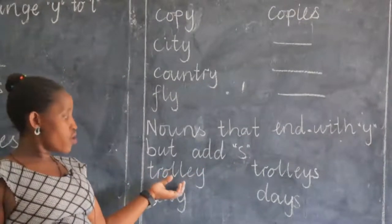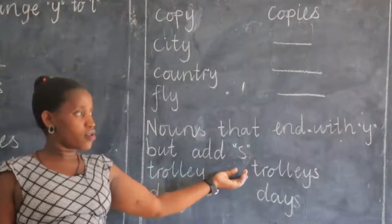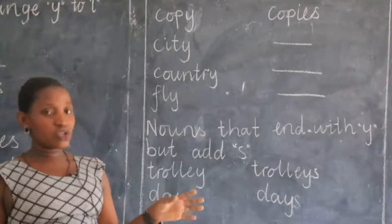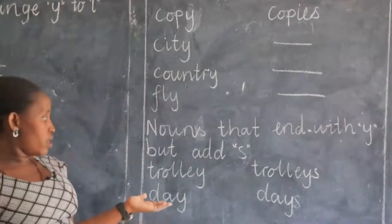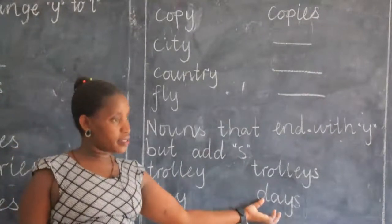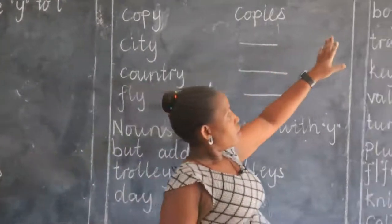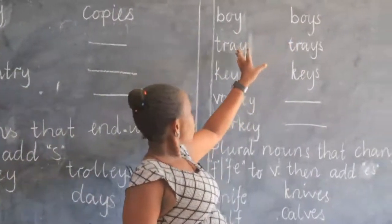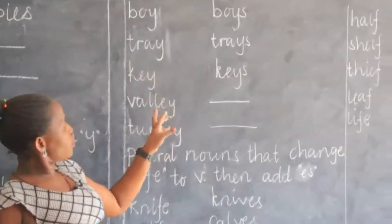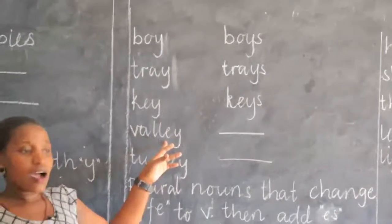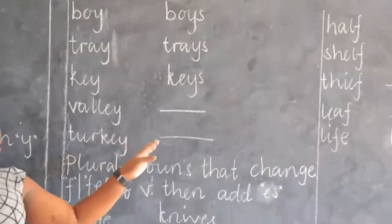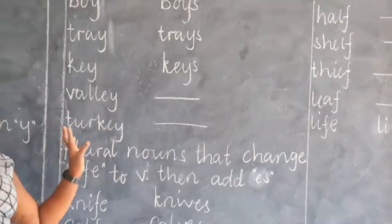For example, we have trolley — for trolleys. Those who go shopping know what a trolley is: that basket where we put our things when shopping and we can roll it. Then we have day, which goes to days. Boy goes to boys. Tray goes to trays. Key goes to keys. Valley — you see that Y is coming after a vowel letter — valley goes to valleys. Turkey goes to turkeys. Donkey goes to donkeys. And so many others — here we are adding S.